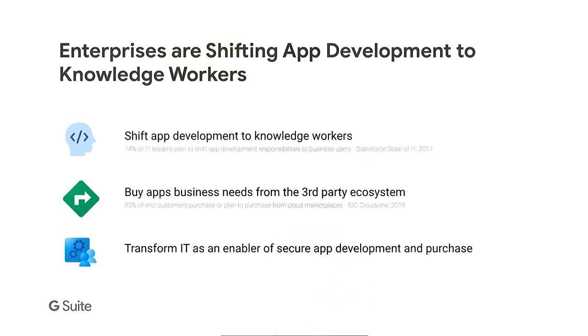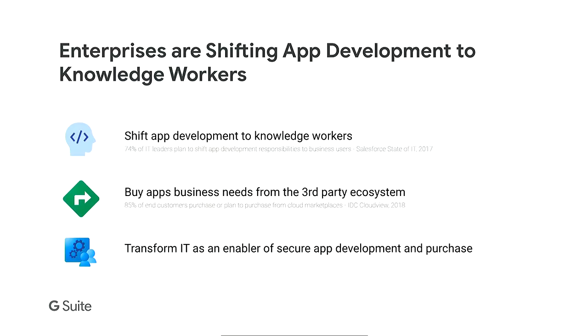The second shift is that there are a lot of SaaS applications coming up — software-as-a-service applications. When there is a need, it's most efficient to go and buy an application as long as there is one that meets the need. That has led to the growth of enterprise marketplaces and ecosystems where ISVs and third-party developers develop these apps and make them available to different businesses. The third shift is that enterprise IT's role itself is evolving — from being an app development organization to being an enabler for development of applications by business users.